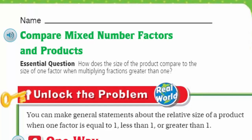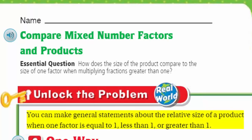We're going to take a look. But first, we need to unlock the problem. Real world! It says you can make general statements about the relative size of a product when one factor is equal to one, less than one, or greater than one. The relative size meaning how it relates to its size. So if we look at a particular number based on that size, we can make a statement about what's going to happen to that product.